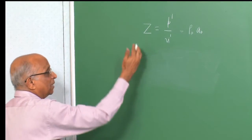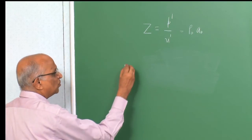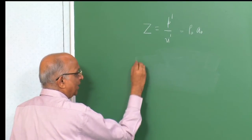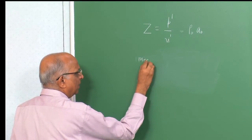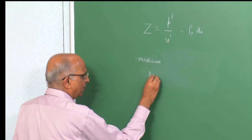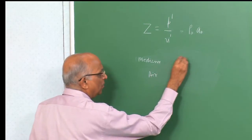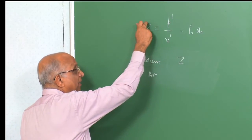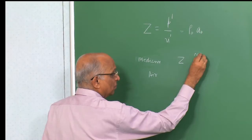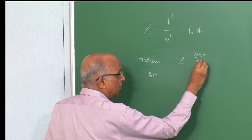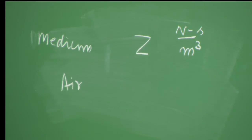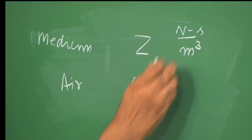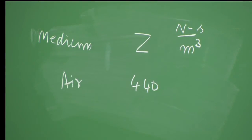We call this the mechanical impedance, and let us put down values for some particular materials. The unit is newton·second per meter cubed. For air, we determined the value to be around 380 — the actual value is something like 440 N·s/m³.